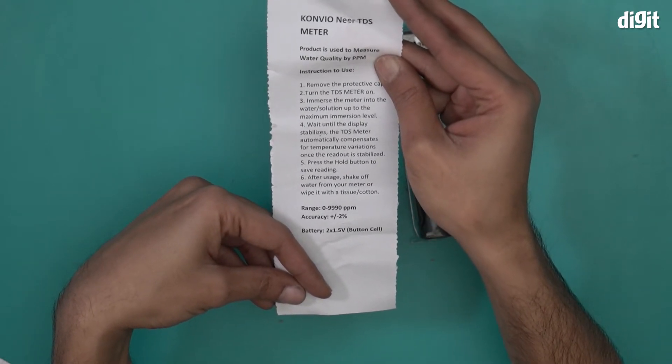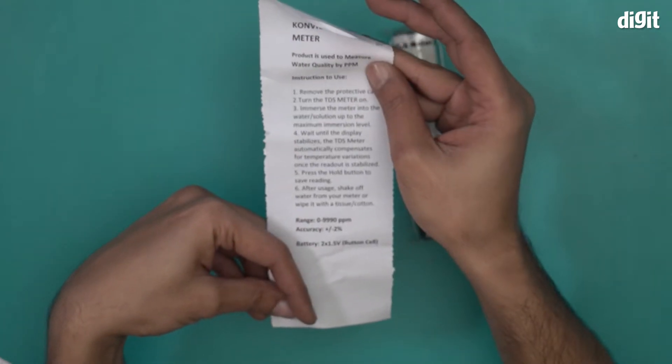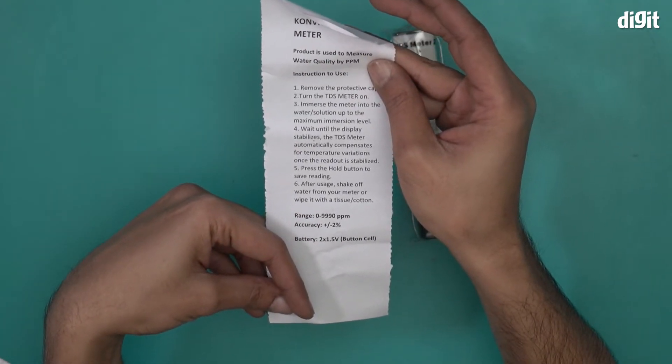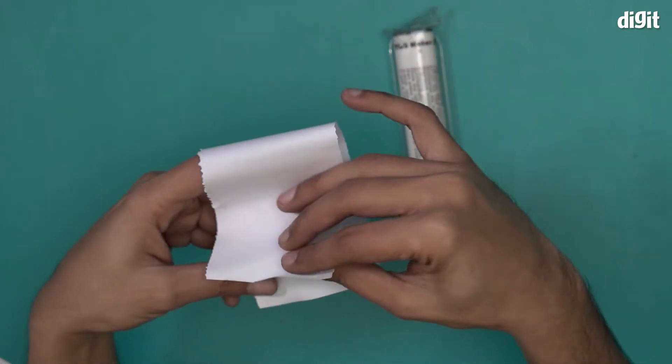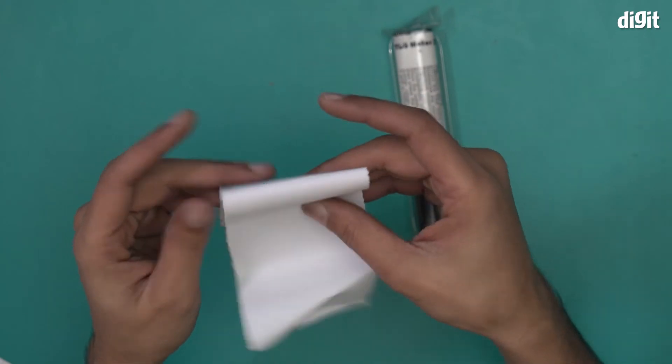After usage, shake off water from the meter or wipe it with a tissue cotton. So yeah, that's it. Range is 0 to 9990 ppm. That's pretty good. It's a great range and it runs on two 1.5 volt button batteries.